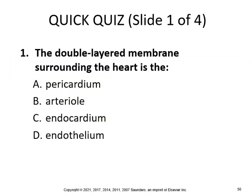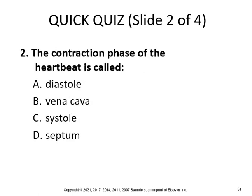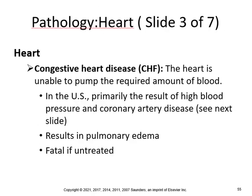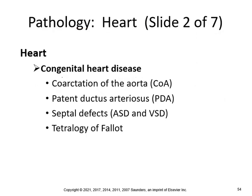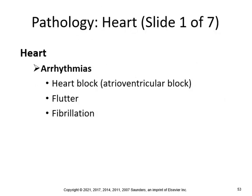The contraction phase of the heartbeat is called systole, and the relaxation phase is diastole. Now, some pathologies of the heart include arrhythmias, heart block, AV block, flutter, and fibrillation.